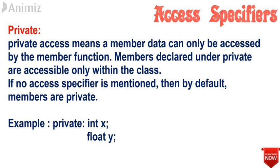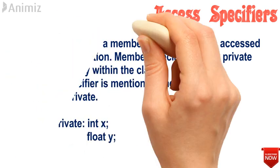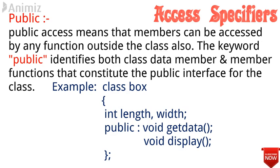You can check the example for declaration of the private access specifier. The second type is public. Public access means that a member can be accessed by any function outside the class as well. The keyword public identifies both class data members and member functions that constitute the public interface for the class. Consider this example where int length and width are not given any access specifier — in this case the default access specifier, that is private, will apply. For the member functions getData and display, we declared them as public, so getData and display can be accessed inside the class and from outside the class also.